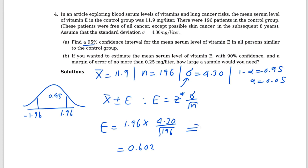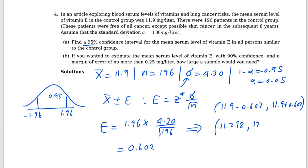Now we know the margin of error, so we can find the confidence interval: 11.9 minus 0.602 to 11.9 plus 0.602. Subtracting gives 11.298, and adding gives 12.502. So the 95% confidence interval is (11.298, 12.502).